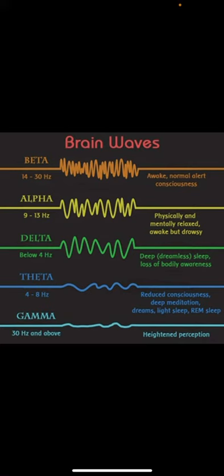So they're saying that we don't dream in delta. Between alpha and delta actually in terms of hertz levels is theta four to eight hertz, reduced consciousness, deep meditation, dreams, light sleep, and REM sleep.